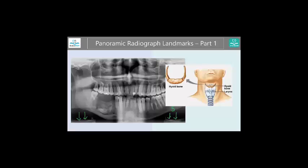One last thing I want to talk about today is this part. Do you see this radiopaque area? This corresponds to the bone and the cartilage. This bone is called the hyoid bone. We call it the U-shape or the horseshoe shape, and it's right here below your chin. It is a very important bone that is connected to the tongue. At the bottom here, you have the larynx and also the thyroid gland somewhere around here. But those bones, because they're very close to your mandible, will be projected onto the radiograph sometimes.